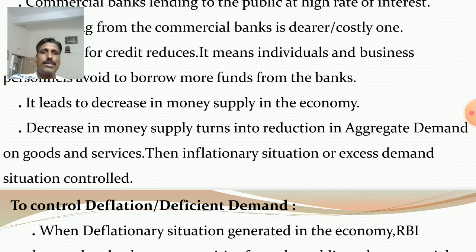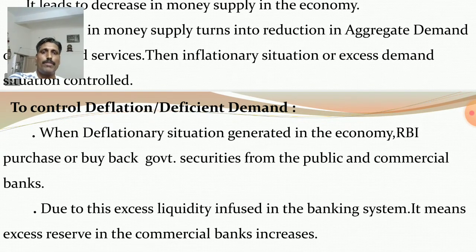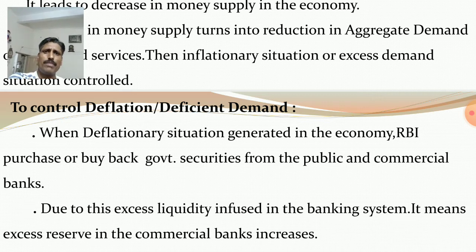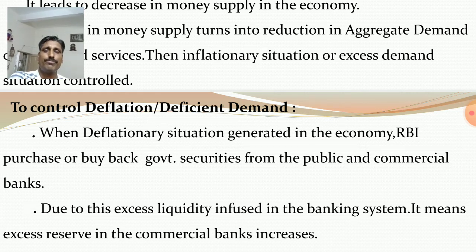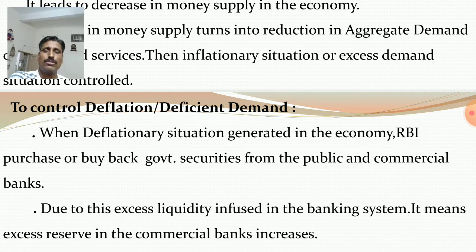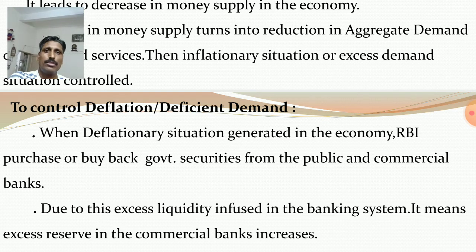The opposite situation happens to control deflation or deficient demand. In a deflationary situation, price level continuously falls. While this is beneficial for consumers, producers face losses. They then cut off production, investment reduces, unemployment arises, income levels of people fall, and demand on goods and services reduces again — causing producers to further cut production. This creates a vicious cycle or recession-type phase in the economy.